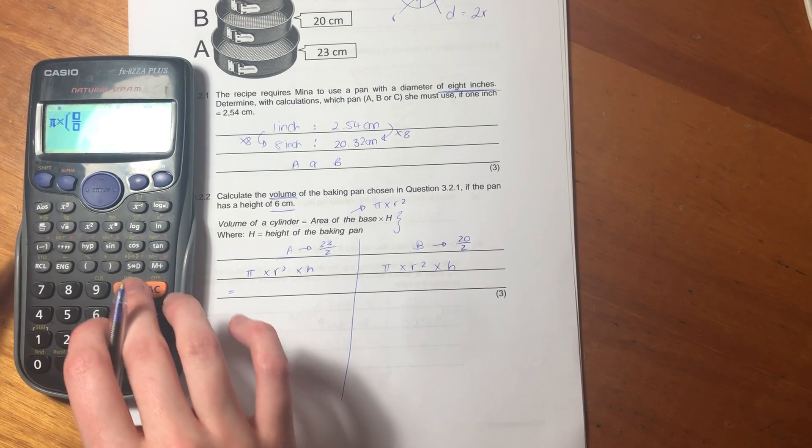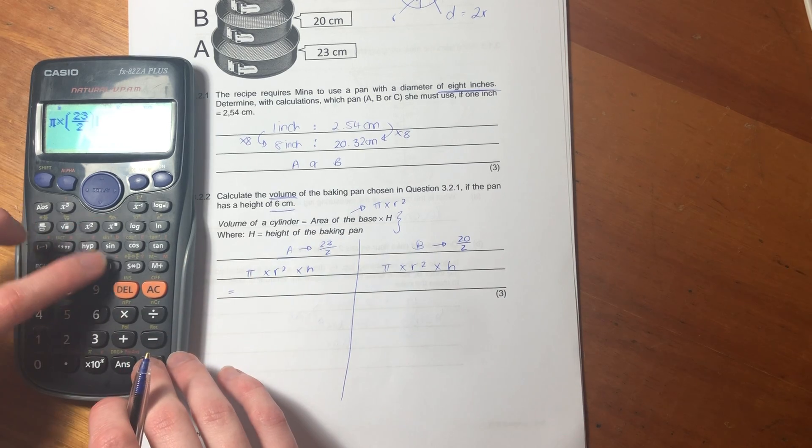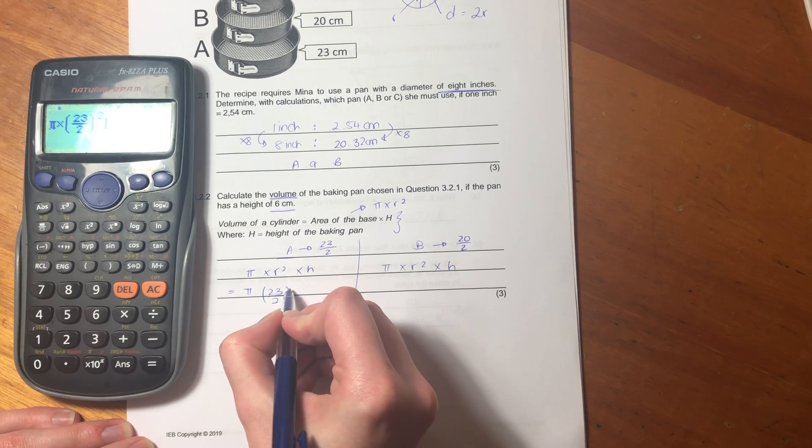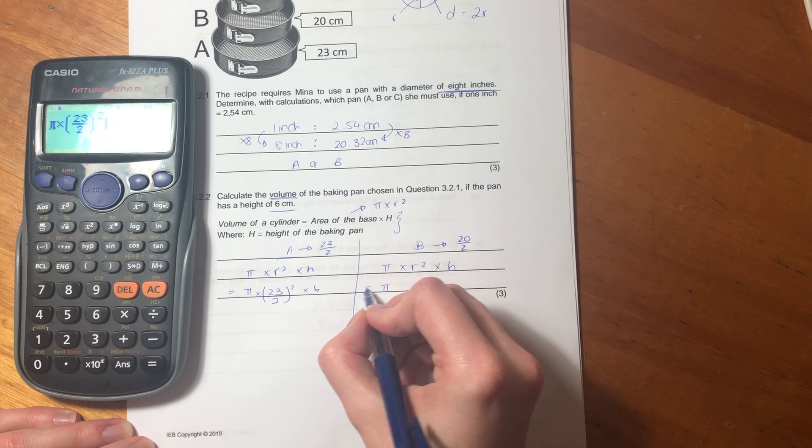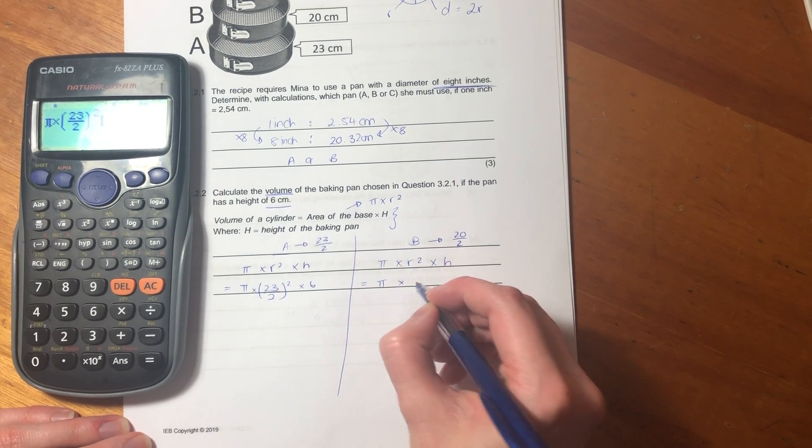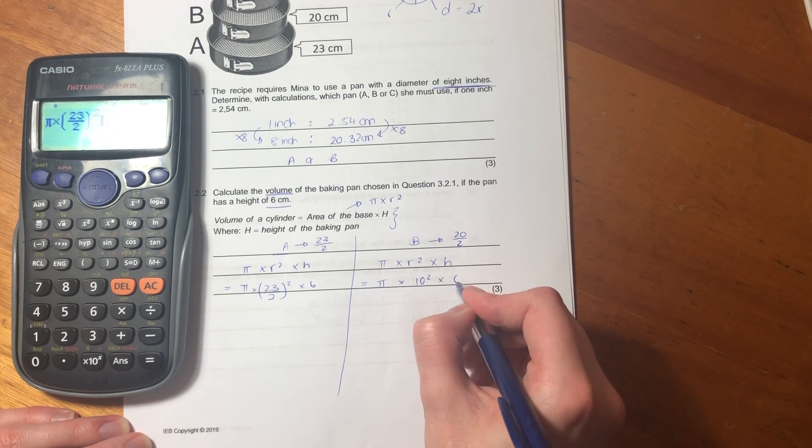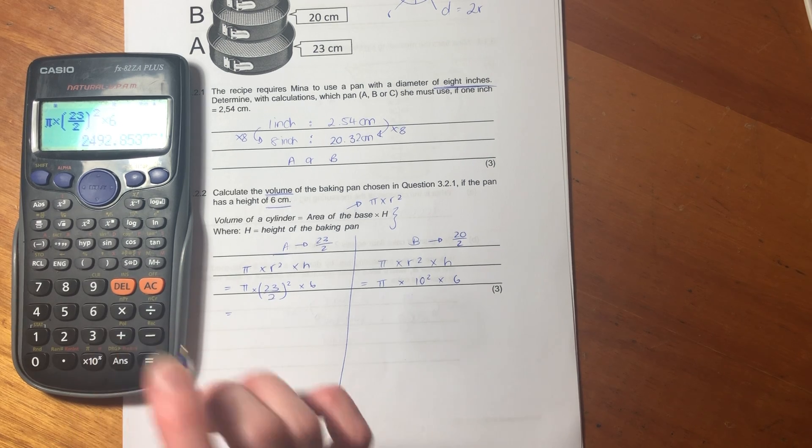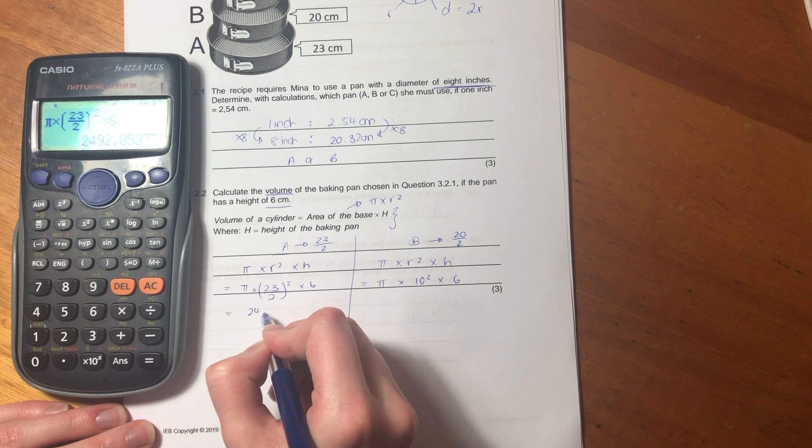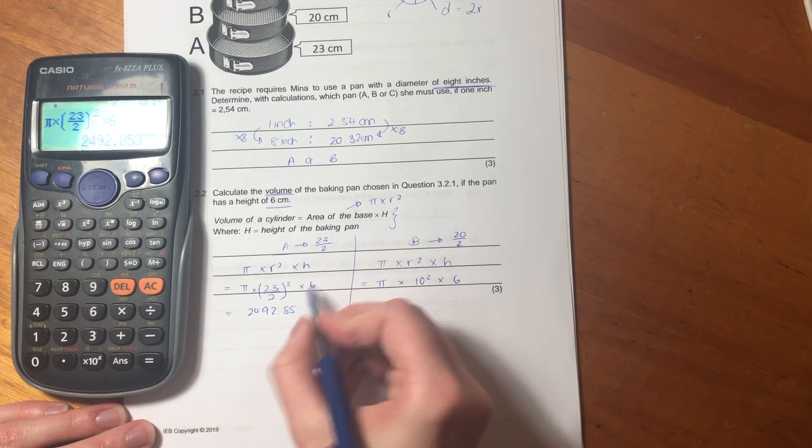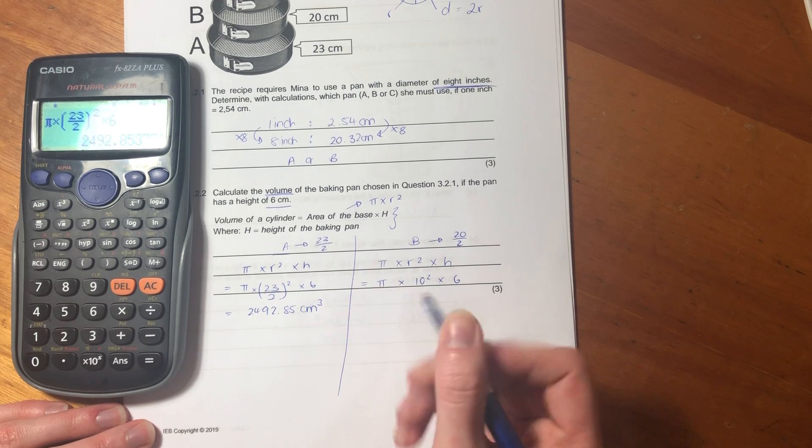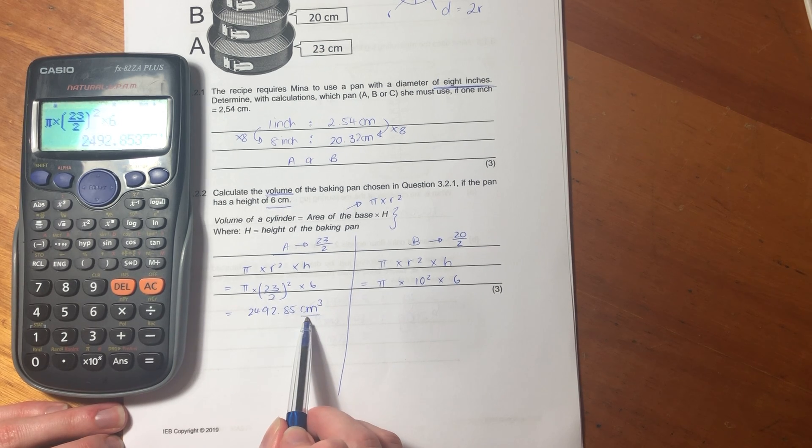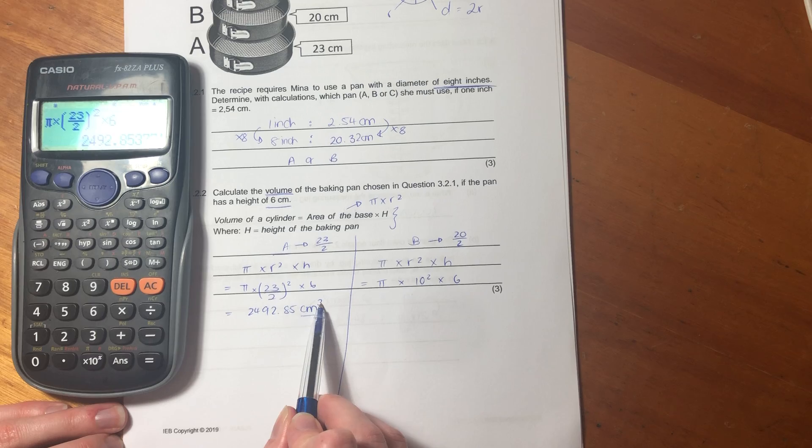So I'm going to put this over here. So 23 over 2 squared, times by 6. I just want to make sure that you can see. Excellent. 20 over 2 is 10, so it'd be 10 squared times by 6. So then you put that in your calculator. And this is an interesting one. It gives us 2492.85 centimeters cubed. Very important what I've done here. Firstly, round off to two decimal places. Secondly, put in units. When we're talking about volume, you must always think about to the power of 3.